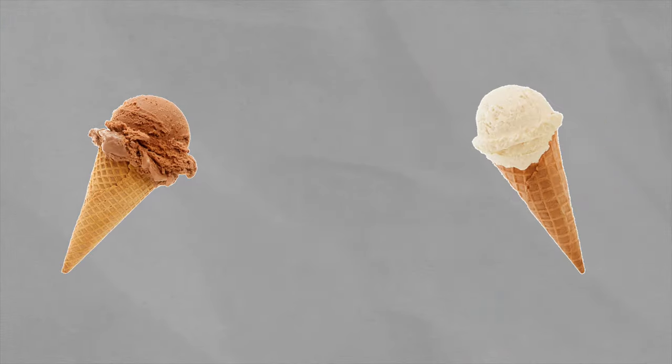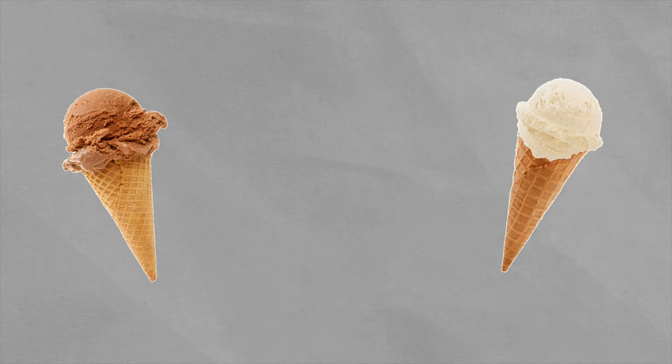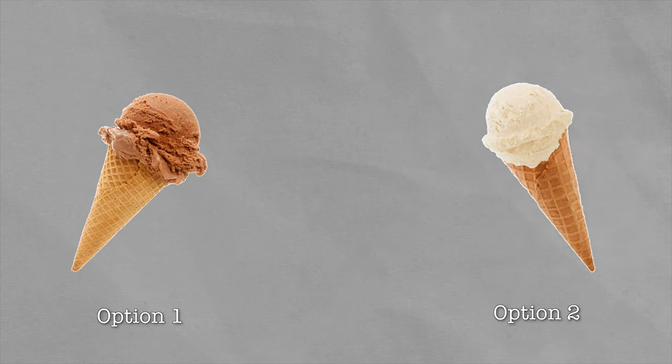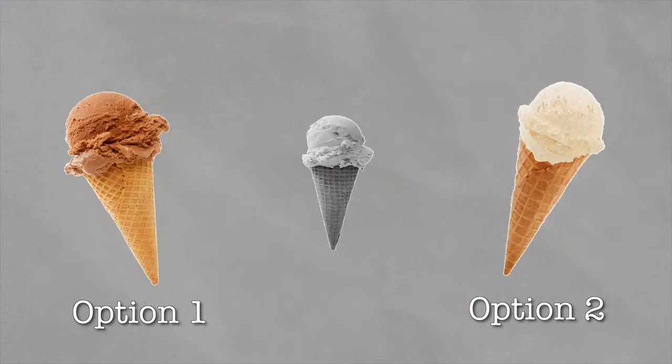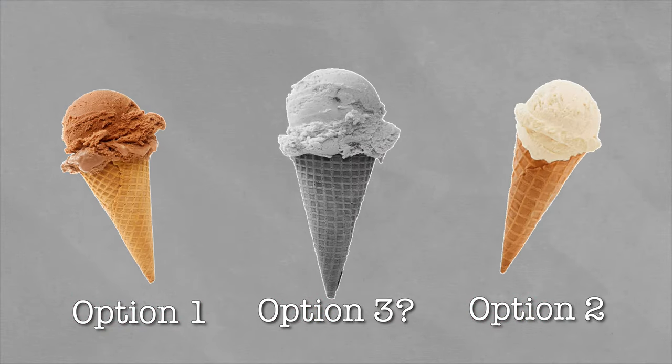Number five: the false dilemma fallacy. This happens when someone throws up two extremes as the only options available. This is why it's also called the black or white fallacy — it's one or the other. This is ridiculous because in almost every situation there are way more than just two options. 'You can either agree with Phil's marketing plan or let the project go to shit. There is no other option, David.' 'Or I could just quit.'